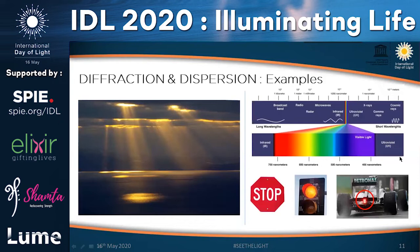Light coming out from behind clouds is a basic example of diffraction. For dispersion, it is essentially a breaking up or scattering of light. Why are danger signs marked in red? Red light has the maximum wavelength, so it scatters the least. Whichever color has the maximum wavelength scatters the least — that's why danger signs are red, so people get cautious and stay safe.